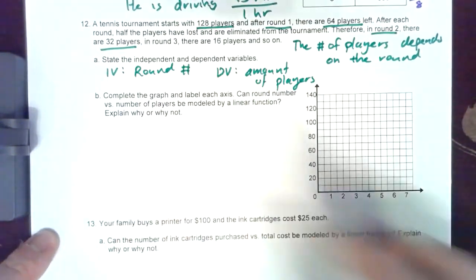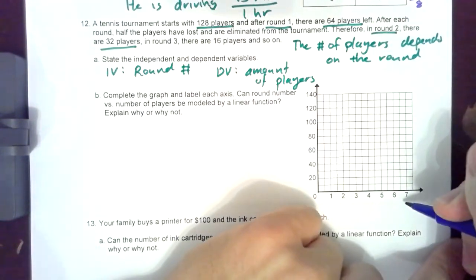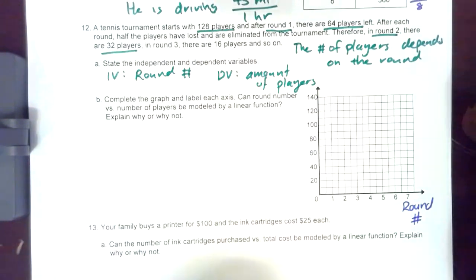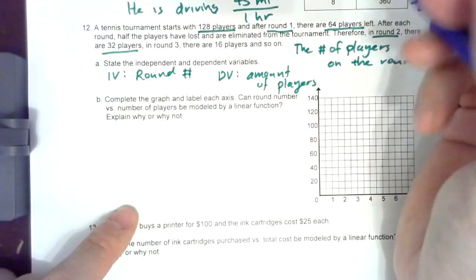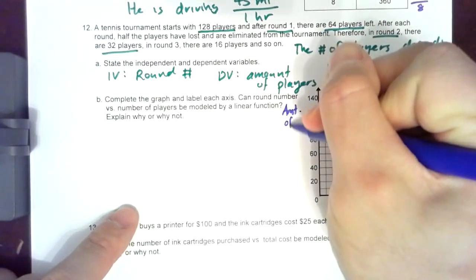You just label your independent variable. Your independent variable is always the x-axis so you label this as the round number, which is like round one, round two, stuff like that. Your dependent variable is going to be the amount of players.